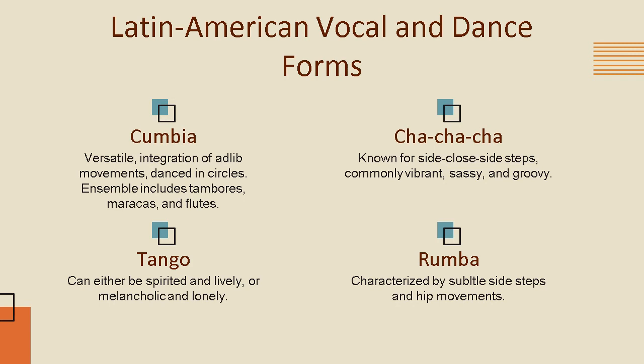Now let's discuss the Latin American vocal and dance forms. The first one is the cumbia, which is known for its versatility and integration of active movement where everyone can be the center of the dance. It is commonly performed in circles and uses tambors, maracas, and flutes. The second one is tango, a musical style that involves ballroom dancing and song — it can be spirited and lively, or melancholic and lonely. Rumba is an Afro-Cuban pop song characterized by its subtle side step and tip movements.